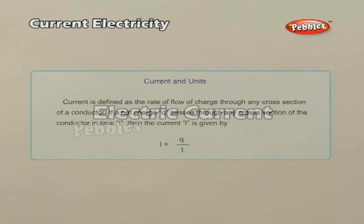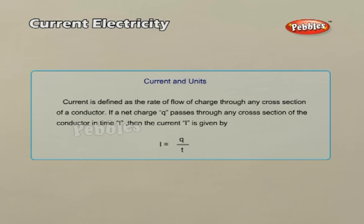Current Electricity. Electric Current is defined as the rate of flow of charge through any cross-section of a conductor. If a net charge Q passes through any cross-section of the conductor in time T, then the current I is given by I equals Q by T.